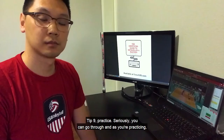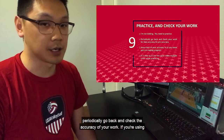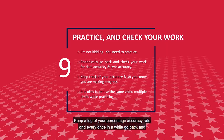Tip 9: practice. As you're practicing, periodically go back and check the accuracy of your work. If you're using video, this is pretty easy — practice for a set, go back and check your accuracy, and keep a log of your percentage accuracy rate. Every once in a while, go back and check how accurate your sync is to the video. It's okay to use the same video when you're practicing time and time again. That's how I started, and that's how I made sure my accuracy level was as high as I possibly wanted.